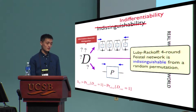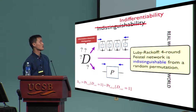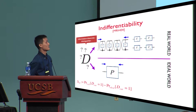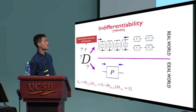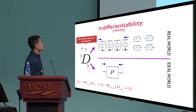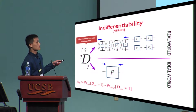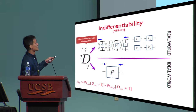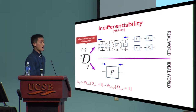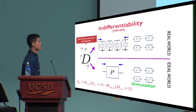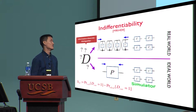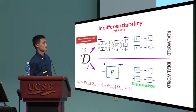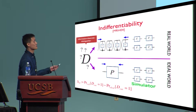In this talk, we will use a stronger notion called indifferentiability, introduced by Maurer, Renner, and Holenstein in 2004. In this case, we give the distinguisher access to the round functions — it can query these small round functions in the real world. However, in the ideal world, there is no round function, so we must construct a simulator that behaves like the round functions so the distinguisher cannot distinguish between the two worlds.